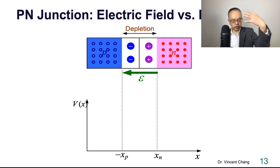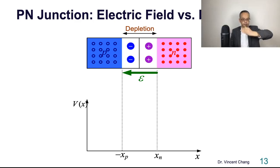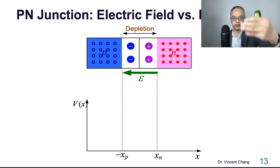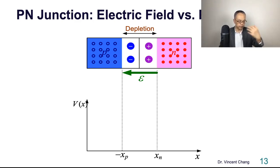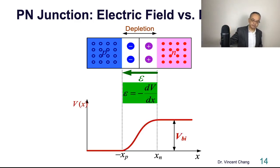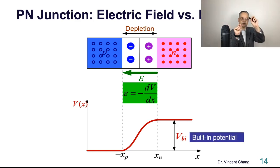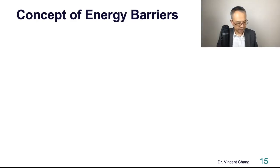Now let's quickly review what we learned from the PN junction — the relationship between electric field and potential. This is the PN junction depletion layer. The left-hand side of the depletion layer is full of acceptor ions, and the right-hand side is full of positive donor ions. Field lines go from the positive ions to the negative ions, so the electric field is built in. Against the electric field, the potential goes up — this is the built-in potential.